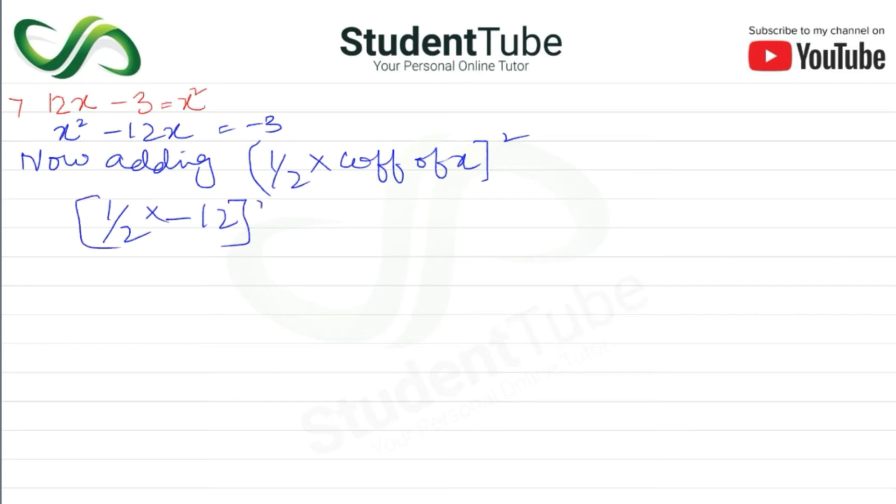½ × -12 = -6, and (-6)² = 36. So we add 36 to both sides of the equation.